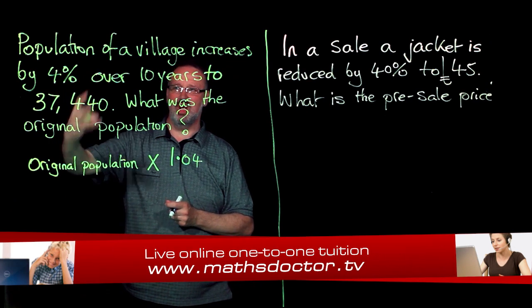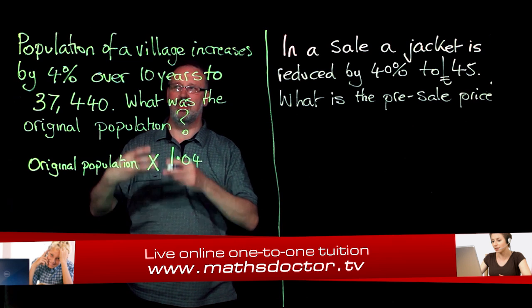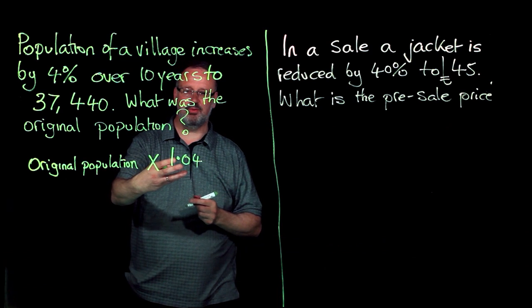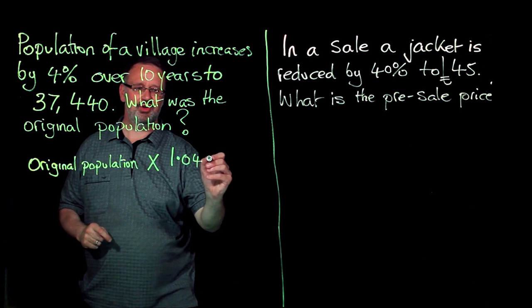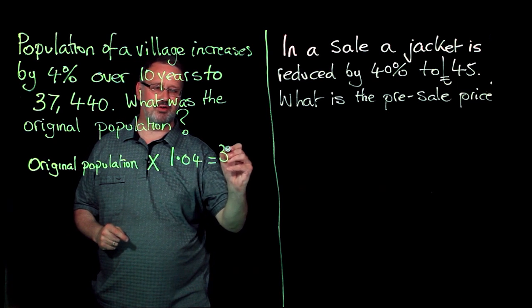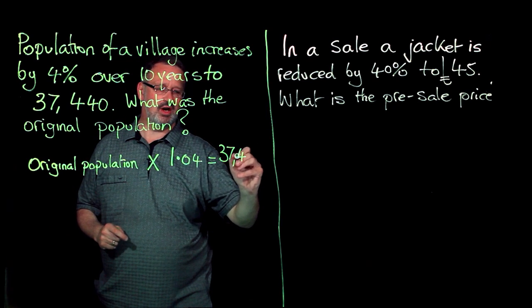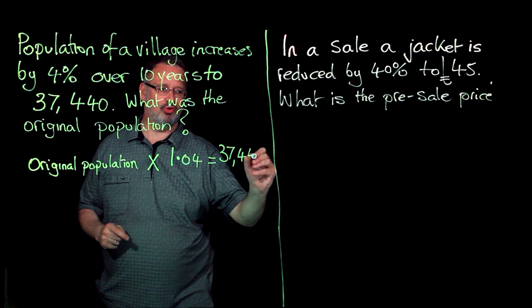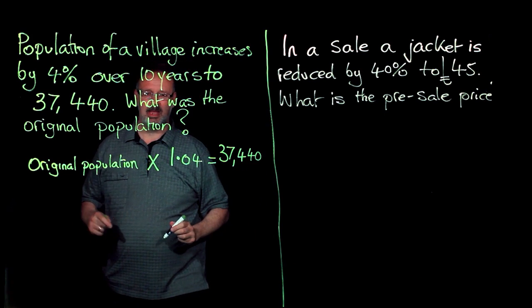Which represents 104% increased by 4%. So 100% is the whole, increased by 4% makes the multiplier of 1.04, and this comes out to be my answer of 37,440.